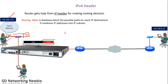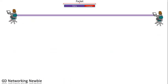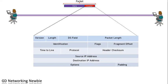Every router maintains a database called the routing table, which has information about all possible paths to reach a specific IP address. Today's discussion is focused on the header part of the packet.